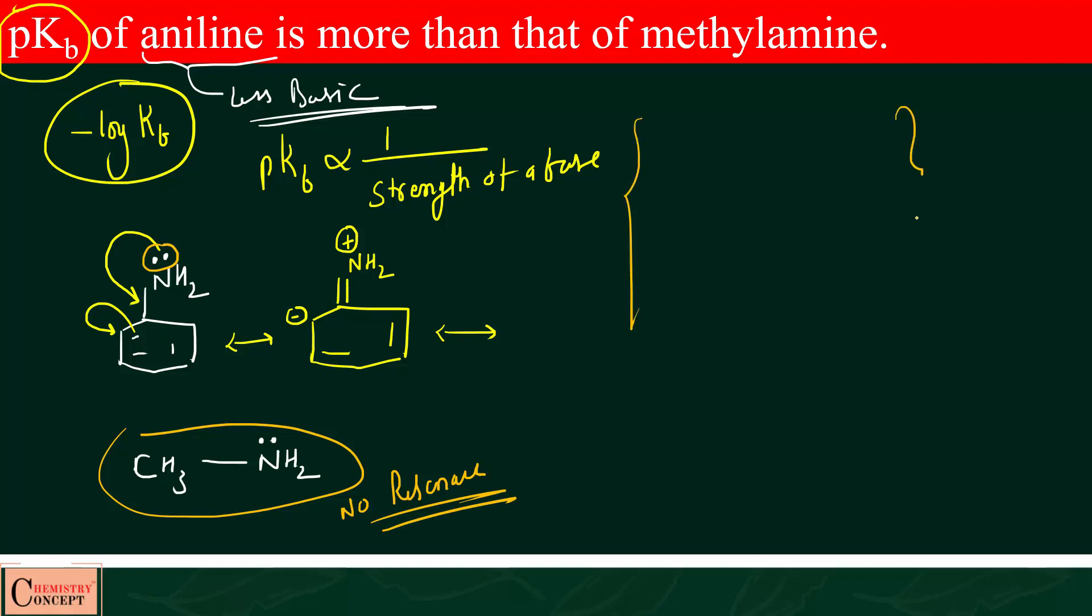If you want to write a one-word answer for why aniline is less basic or why PKB is more, the simple answer is 'due to resonance' and you can get marks for that. But if you want to explain in detail for full marks, write the following.